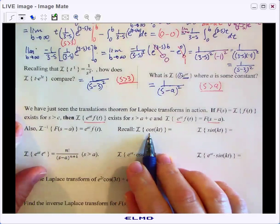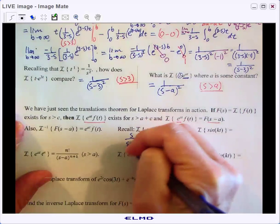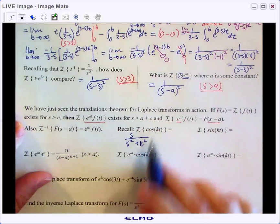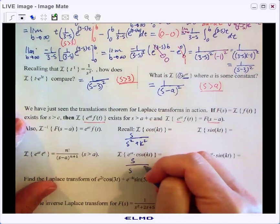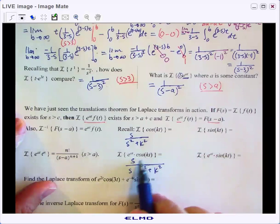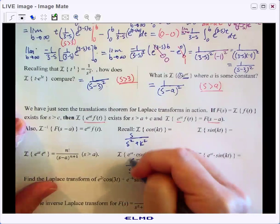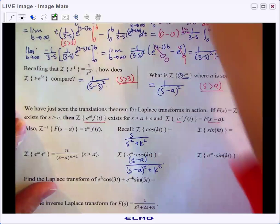So if we remember that the Laplace transform of cosine of kt is s over s squared plus k squared, if we take and do the Laplace transform of e to the at times cosine of t, it's going to look almost the same but with an important difference here. Everywhere there was an s, we're now going to stick in s minus a.